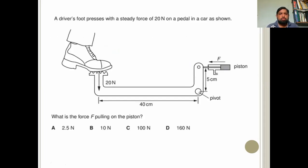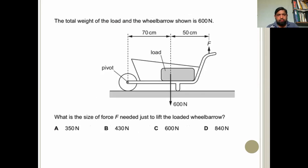A steady force of 20 Newton on the paddle in the car as shown. Continuous force being applied around the pivot and there is a force on the piston. So what is the force of pulling on the piston? So we can see here that the force on piston is around the pivot, it's anticlockwise and force from the piston is clockwise. So distances are identified 40 centimeter, 5 centimeter. So 20 into 40 will be equals to F into 5. So you will be able to calculate F.